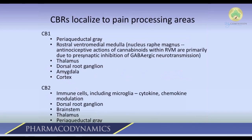As far as pain goes, cannabinoid receptors are localized to all kinds of areas in the anatomical distribution of tissues important for pain processing. One of the most important is the periaqueductal gray, which is an important area in the brain for descending pain processing — how the brain shuts down pain. For example, if you stubbed your toe while being chased by a saber-toothed tiger, your body has a mechanism of suppressing those pain signals — and the brain area responsible for that is full of cannabinoid receptors. They're also found in the thalamus, the dorsal horn, the limbic cortex, and other important areas for pain processing.